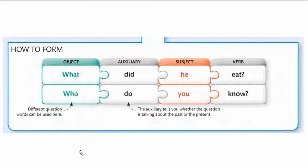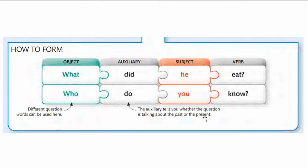Now let us analyze the structure: how object questions are formed. Usually they use the words 'what' and 'who.' The structure is: question word, then auxiliary 'did' or 'do,' then subject, then verb. For example: 'What did he eat?' and 'Who do you know?' The auxiliary tells you whether the question is talking about the past or the present — 'what did he eat' uses 'did,' and 'what do you know' uses 'do.'